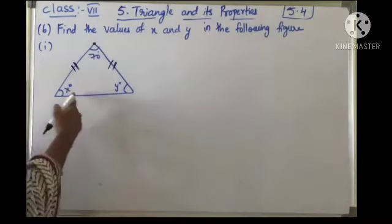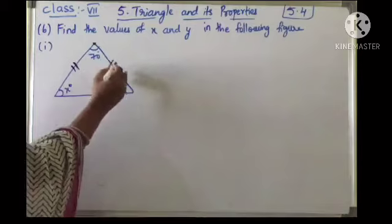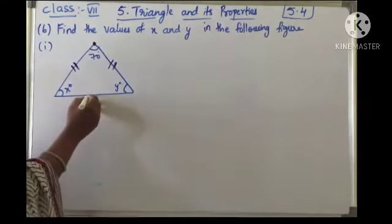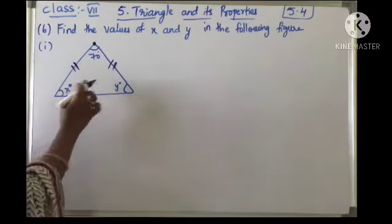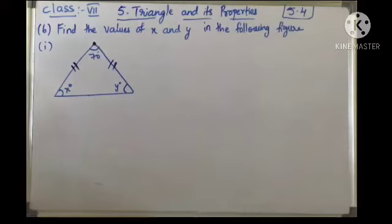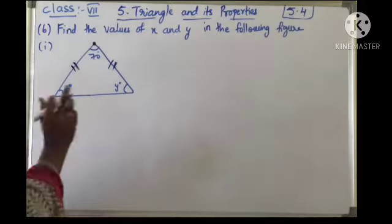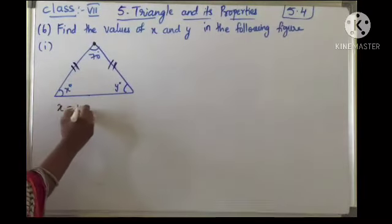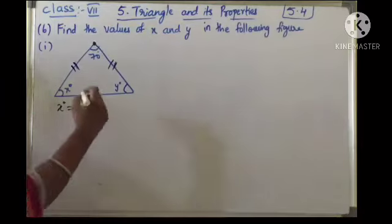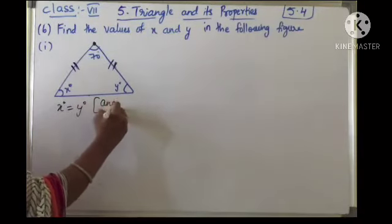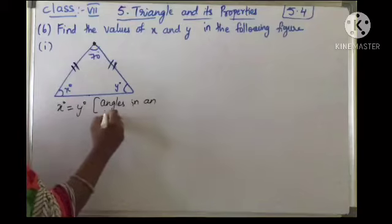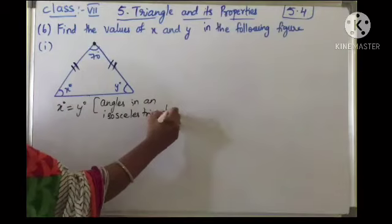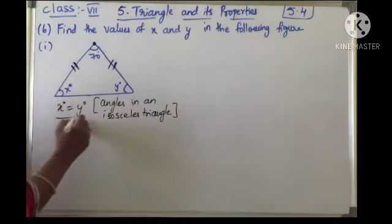So the angles in an isosceles triangle — here these 2 sides are equal, and the opposite angles are x and y. So I can say x is equal to y because of the angles in an isosceles triangle.